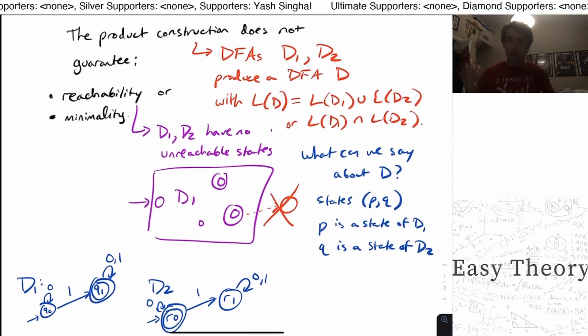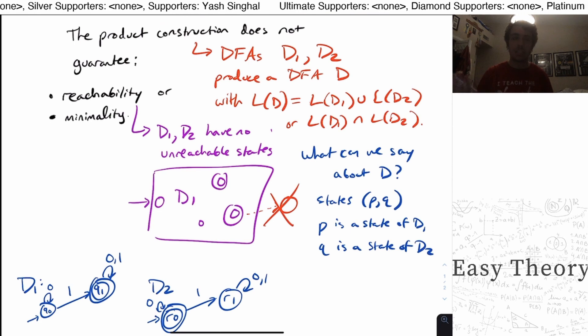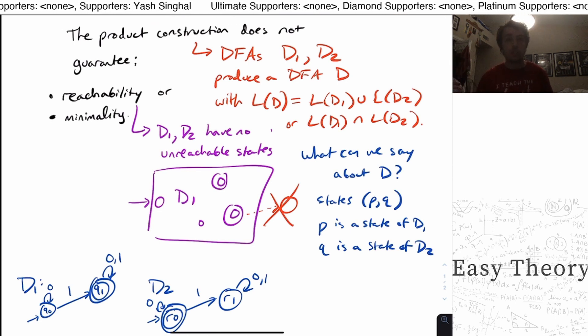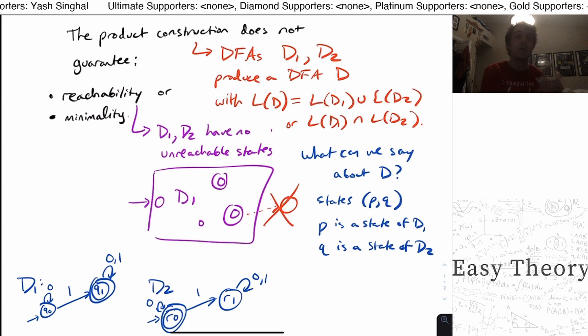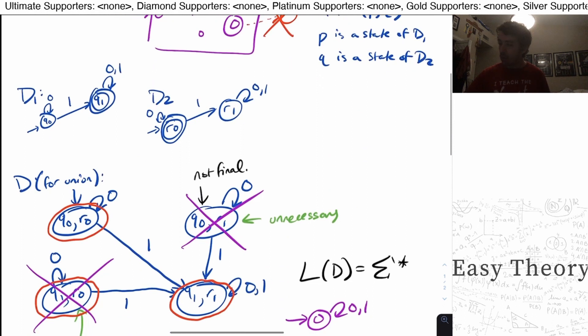So that actually tells us that the product construction does not keep the properties necessarily of the two DFAs that you give it. Not every state is reachable, even if the states in the original machines were reachable. And if the two original DFAs were minimal in terms of number of states, then it's not necessarily true that the product DFA has a minimal number of states, even if you remove all the ones that are unreachable.